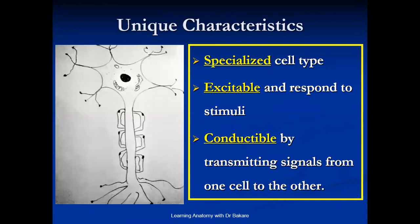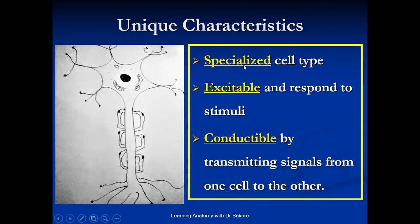The unique characteristics of neurons include the fact that they are a specialized cell type, specifically designed for the kind of function that they present — which includes reception, analysis, and conduction of the interpreted message. They are also excitable, which means that they can respond to any form of stimulus that they receive. They are conductable, which means that they allow the transmission of signal.